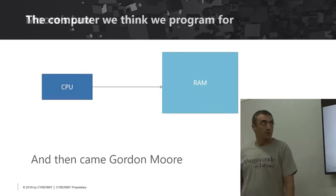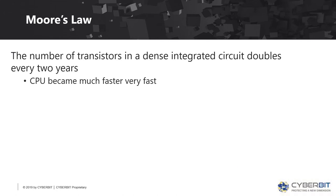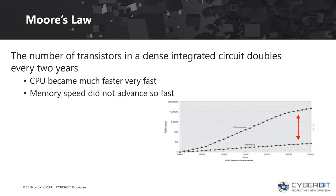Then came Gordon Moore, which we all know from Moore's Law, that says the number of transistors in a dense integrated circuit doubles every two years. It means that the CPU becomes much faster. If running an instruction takes one or two cycles and fetching an instruction takes 200 cycles, the CPU is idle waiting for data 99.5% of the time.